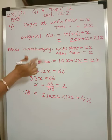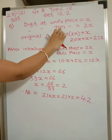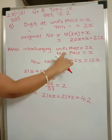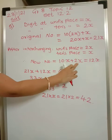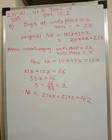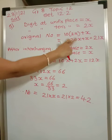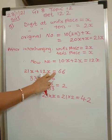Now we are interchanging the digits. x was in units place and will now be in tens place; 2x was at tens place and will now be in units place. After interchanging, the new number is 10 into x plus 2x, which gives 12x. The condition is: if we add the new number to the original number, the sum is 66. So 21x plus 12x equals 66.